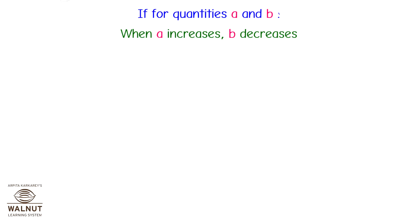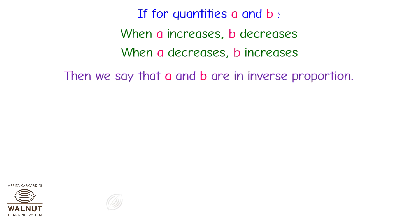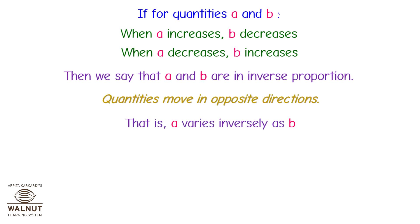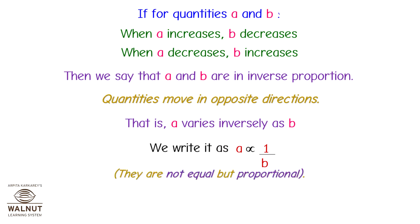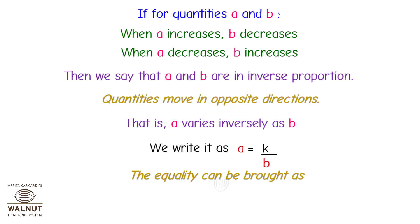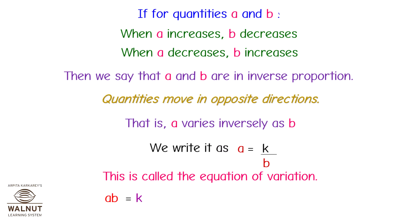For quantities A and B, when A increases B decreases and when A decreases B increases, we say A and B are in inverse proportion — quantities move in opposite directions. We write it as A is inversely proportional to 1 upon B, or A equals K upon B. This is called the equation of variation, where AB equals K and K is the proportionality constant.